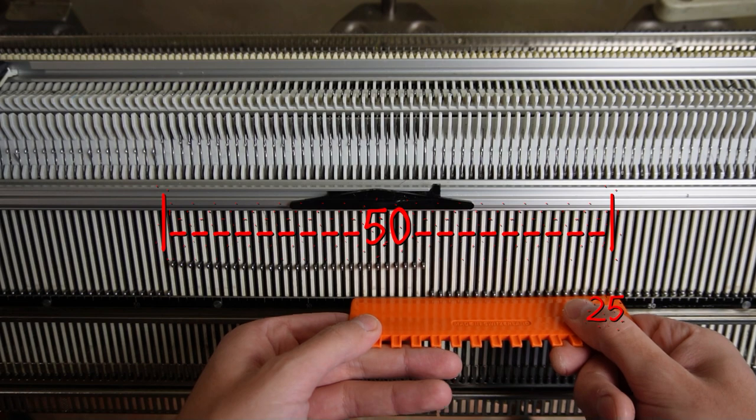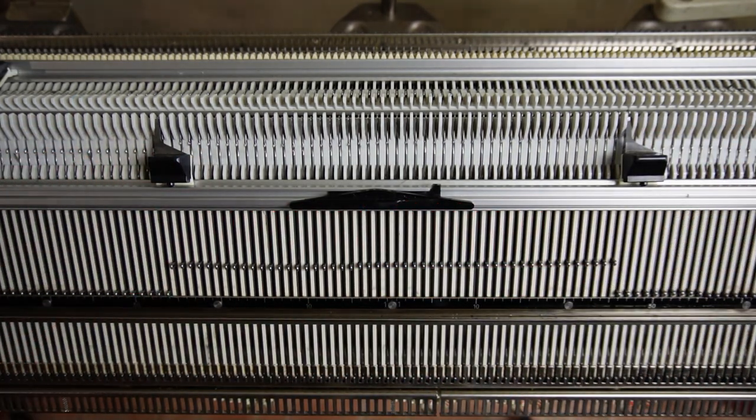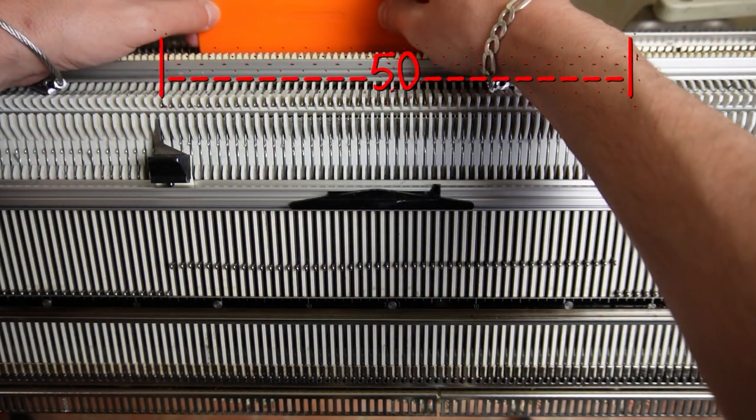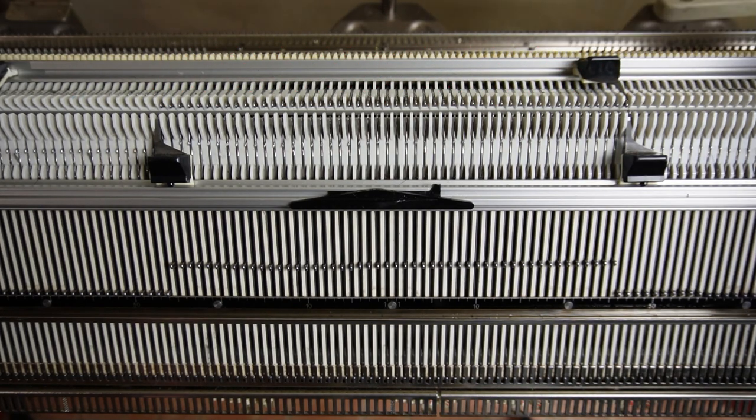25 to the left and 25 to the right of the center. Place the edge springs on the last working needles. Now raise the opposite 50 needles on the back bed. Place the edge springs on the last working ones.